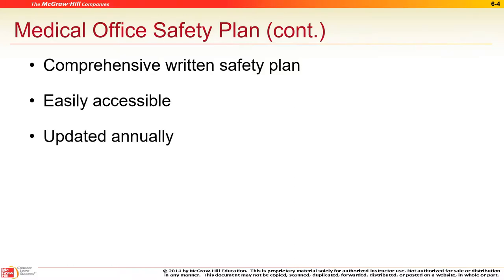Every facility is going to have a slightly different safety plan. Usually you have to be seen by one of their approved facilities within 24 hours. For a work-related injury, the first thing they screen is whether there are any drugs in your system — because if drugs are found and there was a workplace injury, the insurance may not be covered.